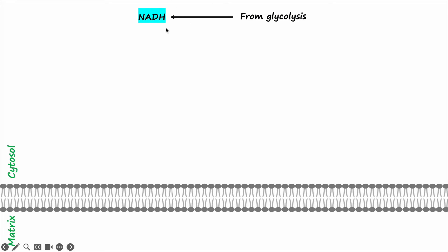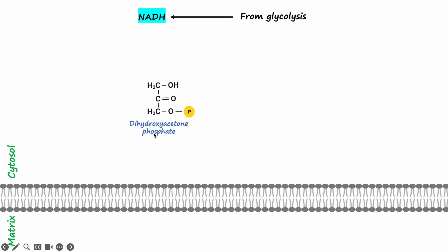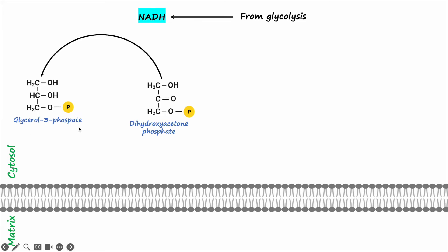Here we have NADH generated in the glycolysis pathway. Electrons from NADH are first transferred to dihydroxyacetone phosphate, which is an intermediate in the glycolysis pathway. When electrons from NADH are passed on to dihydroxyacetone phosphate, it is reduced to glycerol-3-phosphate, and during the reaction NADH is oxidized to NAD+. This NAD+ can then be used in the glycolysis pathway.